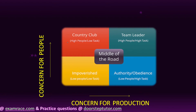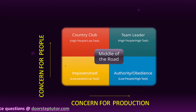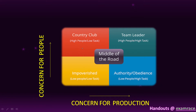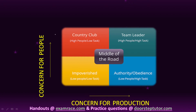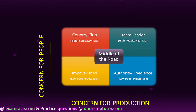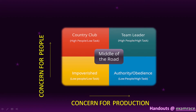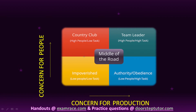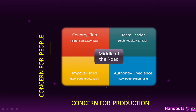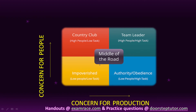Country Club leadership is positioned at (1,9) — x-axis at 1 (low task) and y-axis at 9 (high concern for people). So it has high relationship but low task. Authority-Obedience has high task and low people. Middle of the Road belongs at (5,5), maintaining a balance between the two dimensions.